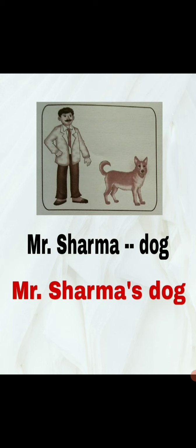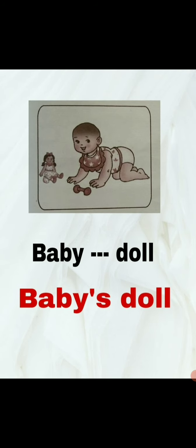The next one is Mr. Sharma dog. You can see in the picture a man — the name of the man is Mr. Sharma, and there is a dog. So the answer is Mr. Sharma's dog.